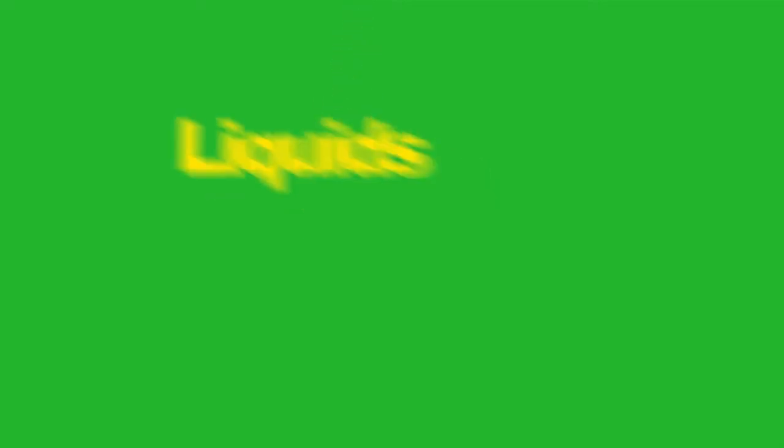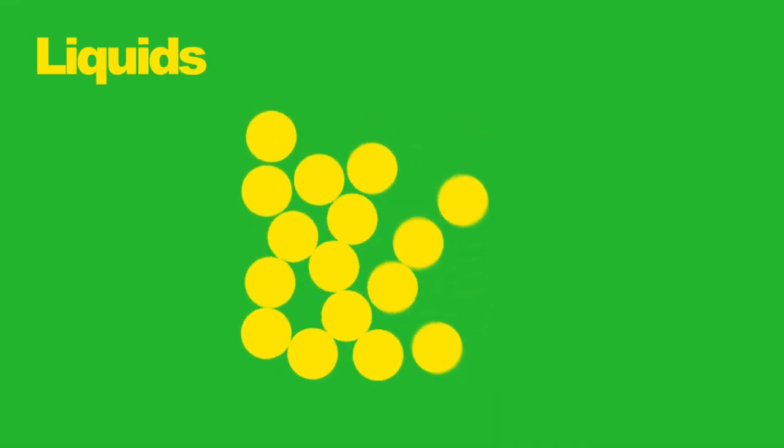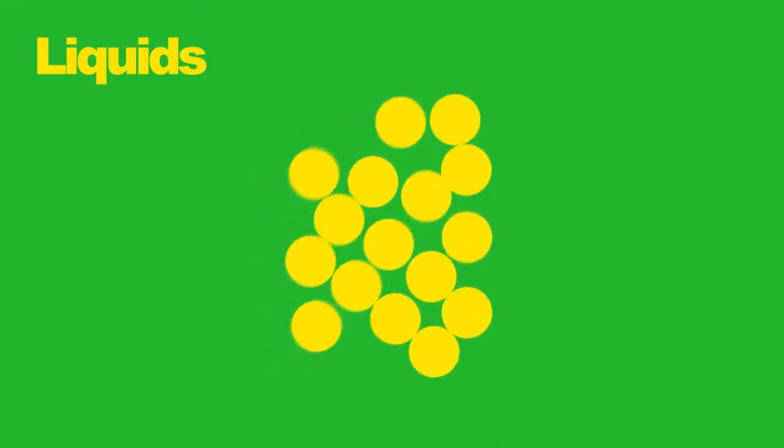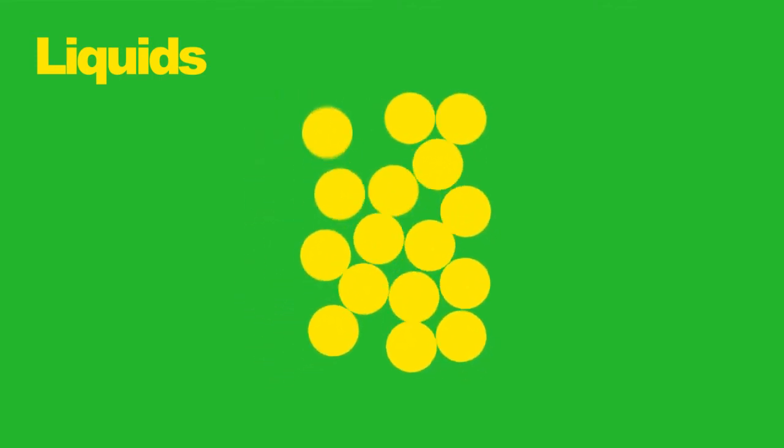Liquids. In a liquid, the particles are still close, but they are arranged randomly. Remember, the particles are constantly moving. So in a liquid, because the particles are close but not tightly packed, they move around a lot. The forces between the particles that hold them together are weaker in liquids than in solids. This enables them to move freely.